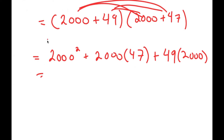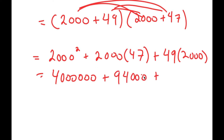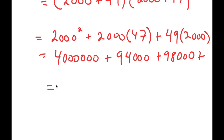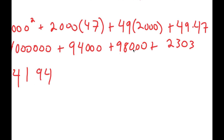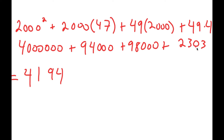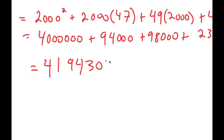2000 squared is 4,000,000. 47 times 2000 is 94,000. 49 times 2000 is 98,000. And 49 times 47 is 2,303. Adding all these up: 4,000,000 plus 94,000 plus 98,000 — that's 194,000 — plus 2,303, giving 303 at the end.